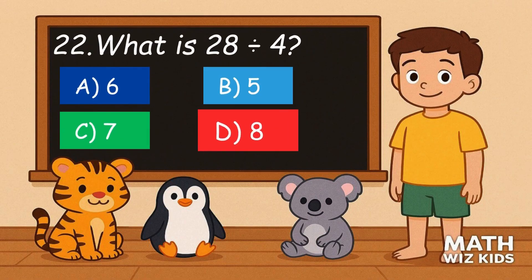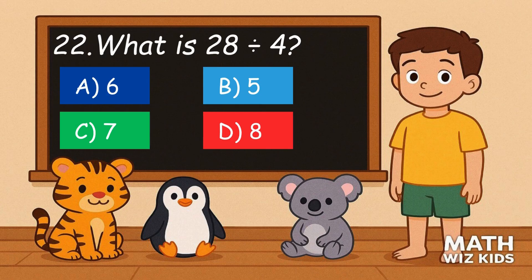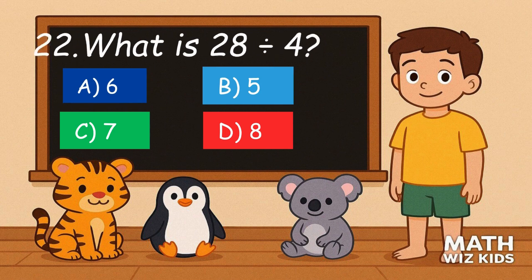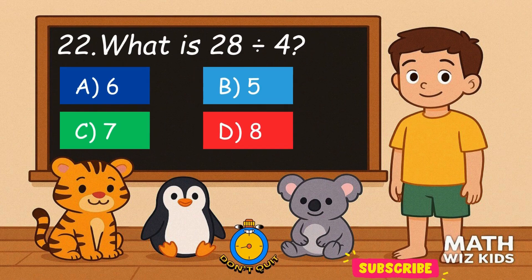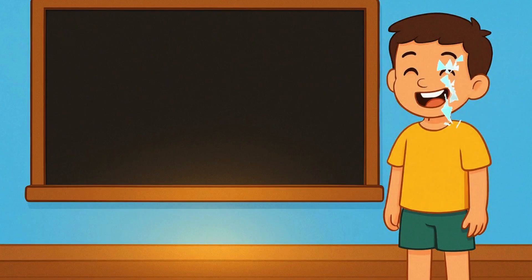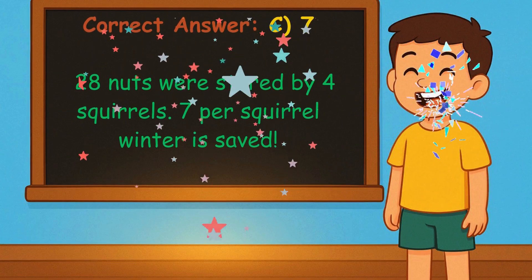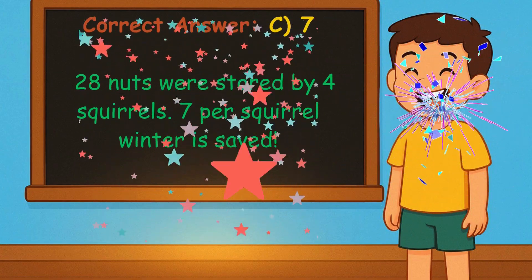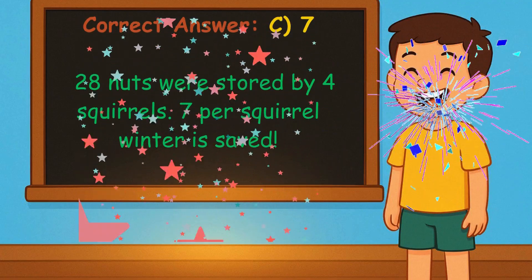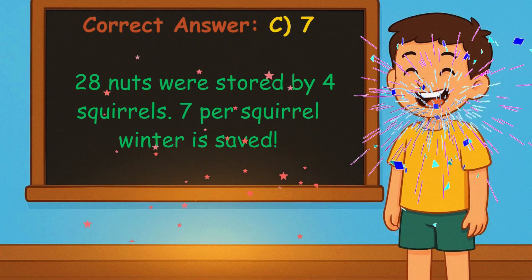22. What is 28 divided by 4? Is it A, 6, B, 5, C, 7, or D, 8? Correct answer is 7. 28 nuts were stored by 4 squirrels. 7 per squirrel. Winter is saved!